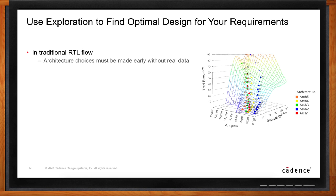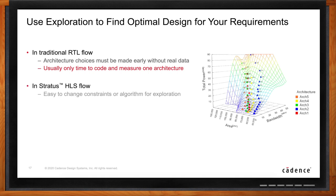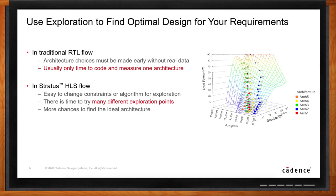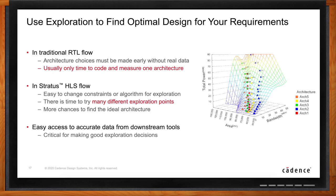That's one of the very big advantages of HLS. If you're writing RTL by hand you have to make choices early because it takes a long time to create the RTL, so you may only have time for one or two experiments. But in the Stratus HLS flow it's very easy to change constraints or the algorithm for exploration because it's all high-level code. That gives you time to try many different points of exploration, which gives you a better chance to find the best architecture — which may not be the same for different applications.